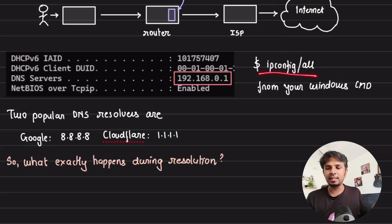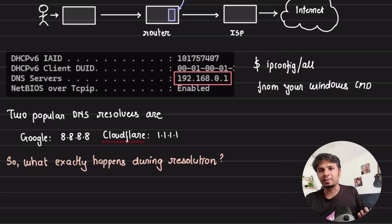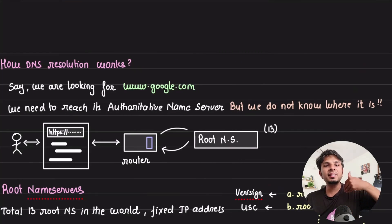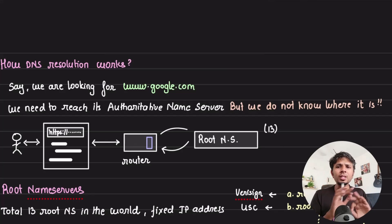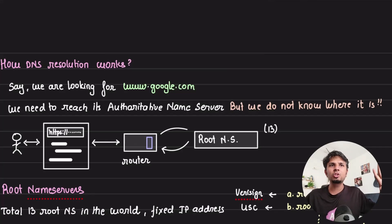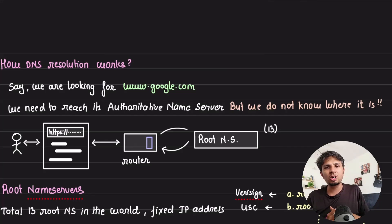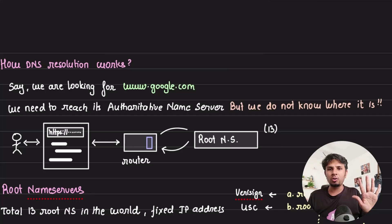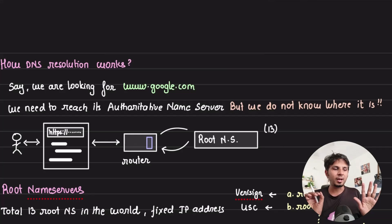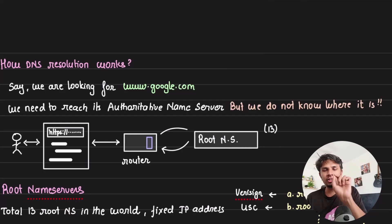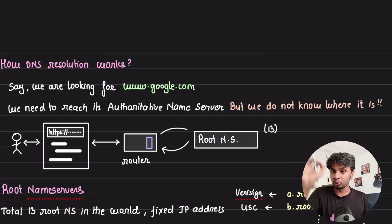I'd highly recommend running that command on your terminal to see what your DNS resolver is, and try changing it to see what happens. Now let's look at the DNS resolution process — assume there is no caching at any layer. Say you're looking for www.google.com. The request from your browser goes to the router, and the router will talk to something called a root name server.